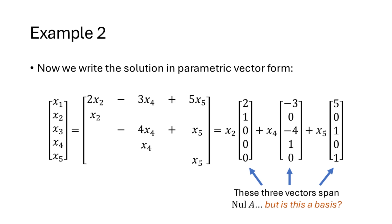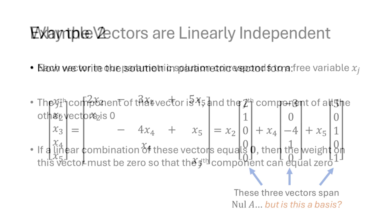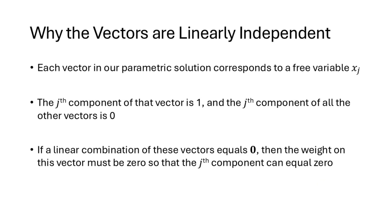But is it a basis? It turns out the answer is yes. When we find the parametric solution, we always get one vector for each free variable. If x_j is one of those free variables, the vector associated with x_j will have a 1 in its j-th position, while all other vectors have 0s in that j-th position. So if a linear combination of those vectors equals the zero vector, the coefficient of the only vector with a nonzero entry in position j must be 0, forcing all coefficients to be 0 — proving linear independence.